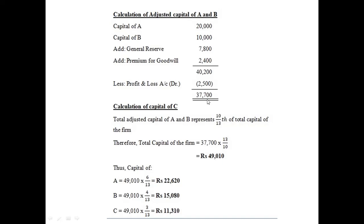C is coming for a 3/13th share. Looking at the new profit-sharing ratio already given — 6:4:3 — C's portion is 3. If we exclude that 3, we get 6 + 4 = 10. So A and B's combined adjusted capital of 37,700 represents 10/13ths of the total capital of the firm.